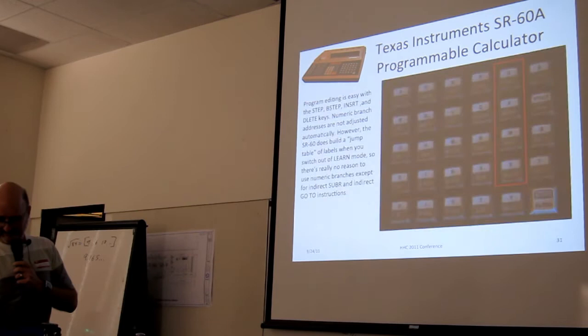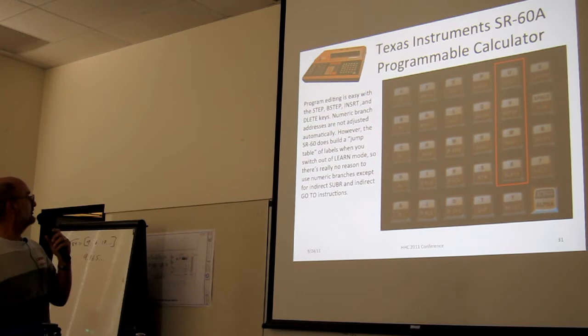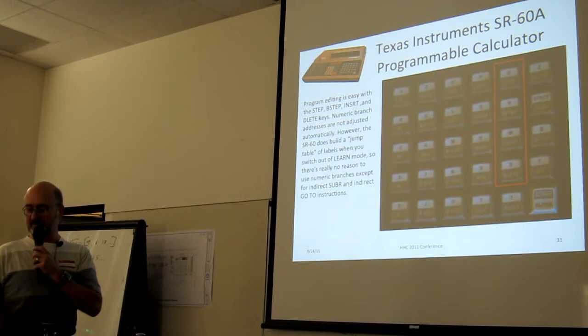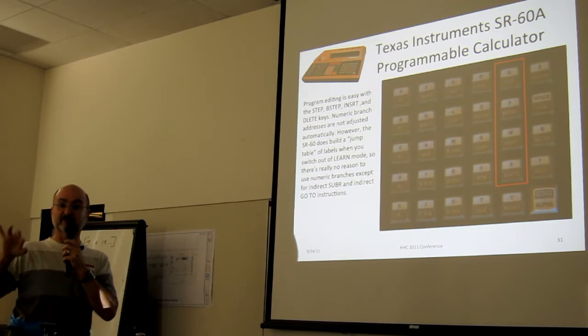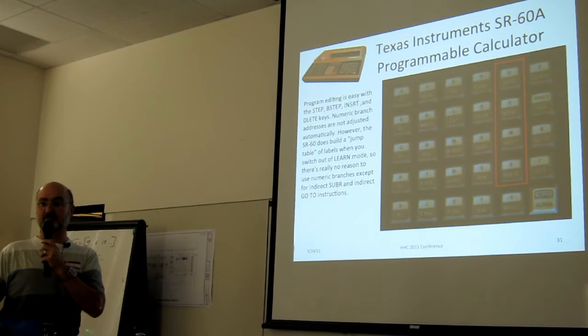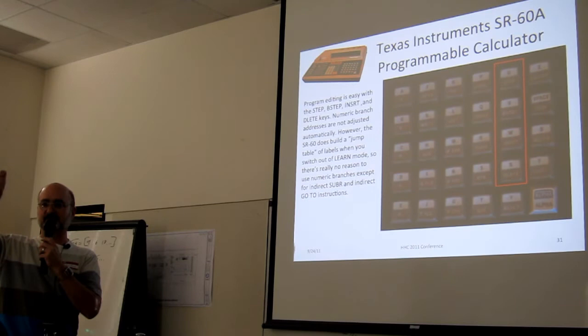Full program editing. We've got step, back step, insert, and delete, although insert and delete can take a little while if you've got a long program. One nice thing about the TI, this is the first calculator I know that actually builds a little internal jump table that keeps track of the labels. So, although you can go to numeric addresses, there's hardly any reason to do so, because going to a label is just as fast. When you take it out of learn mode, it sits there and flickers the display for a few seconds while it runs through the program and builds the jump table. That's kind of cool.